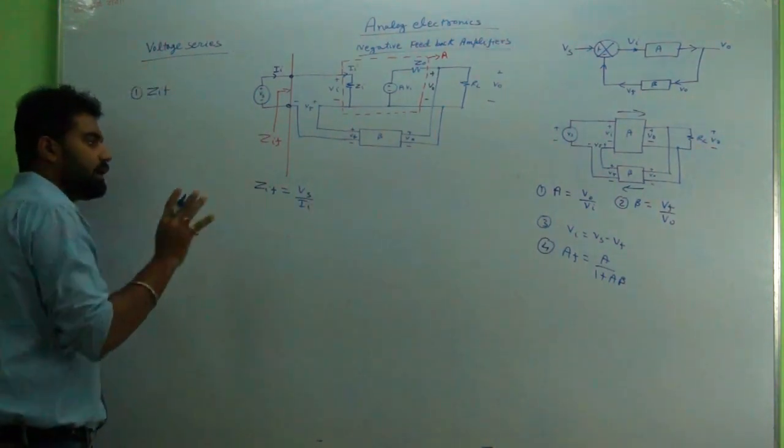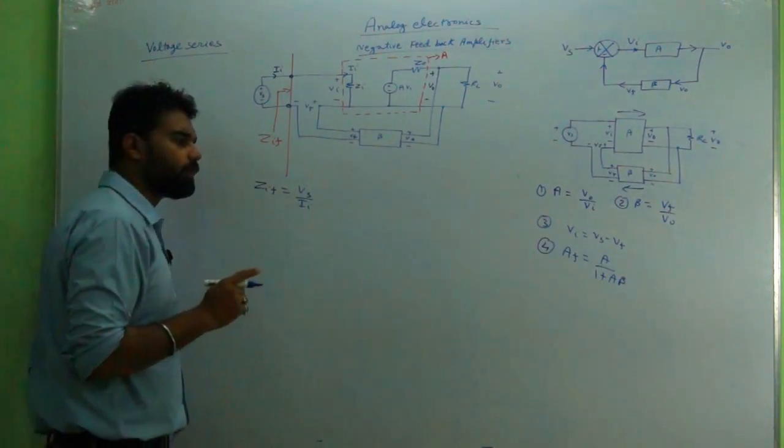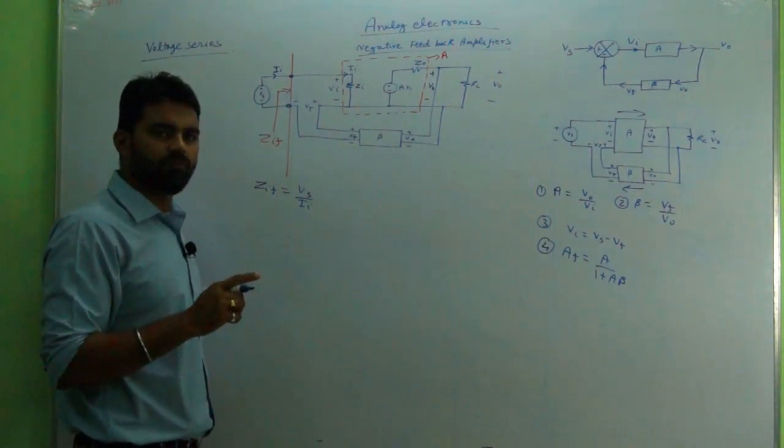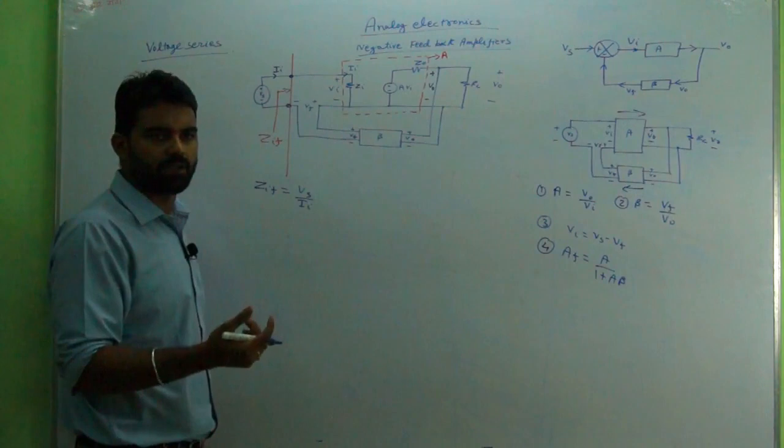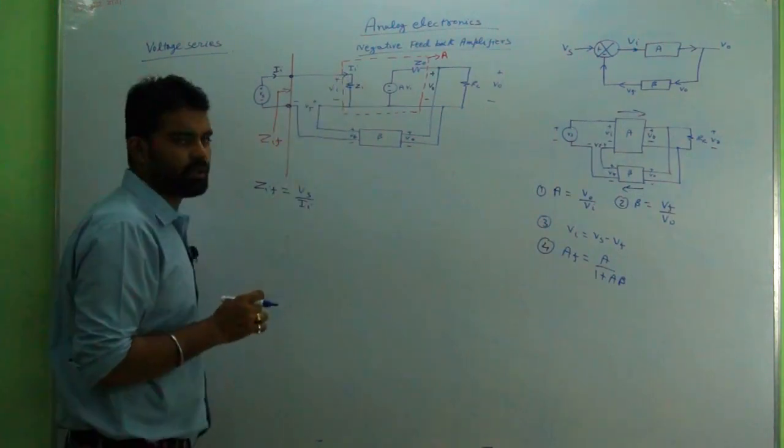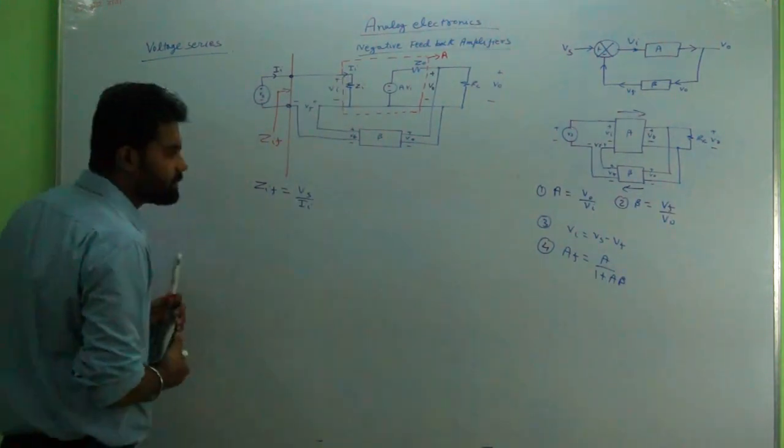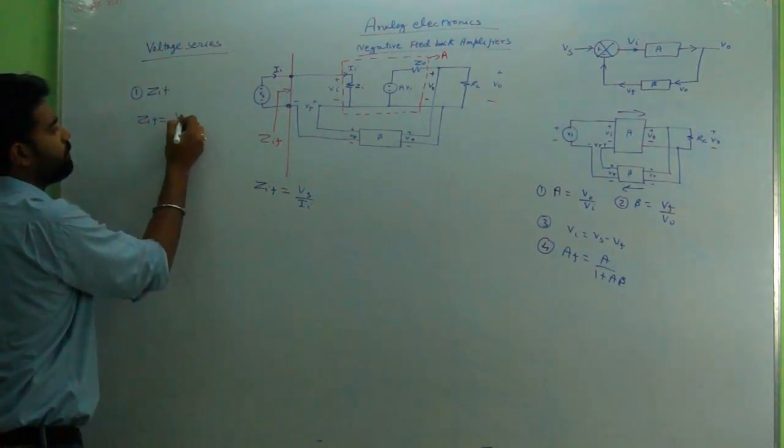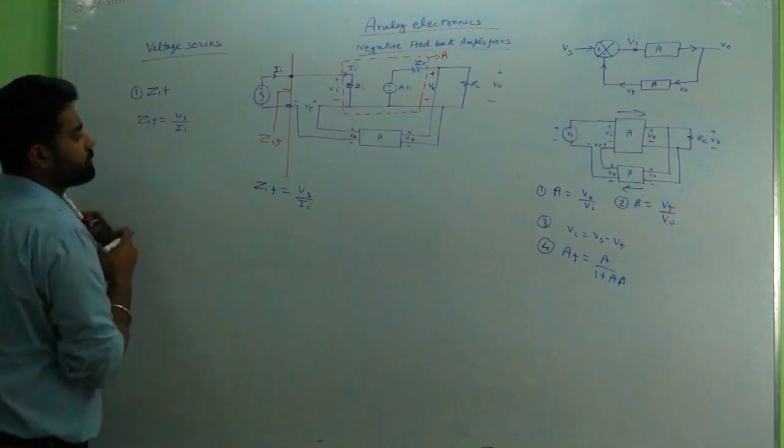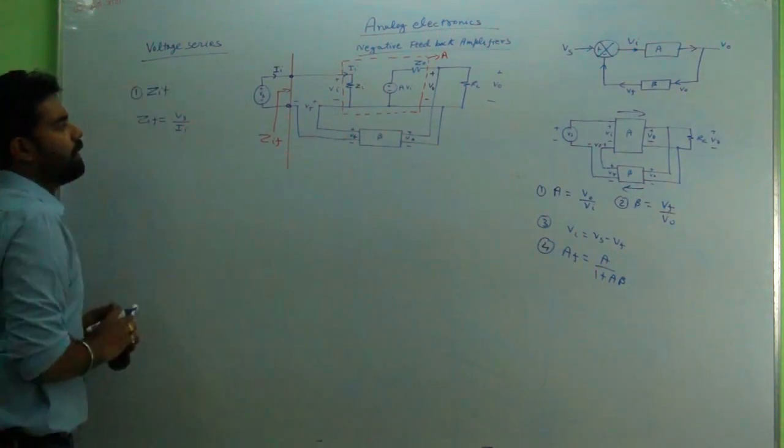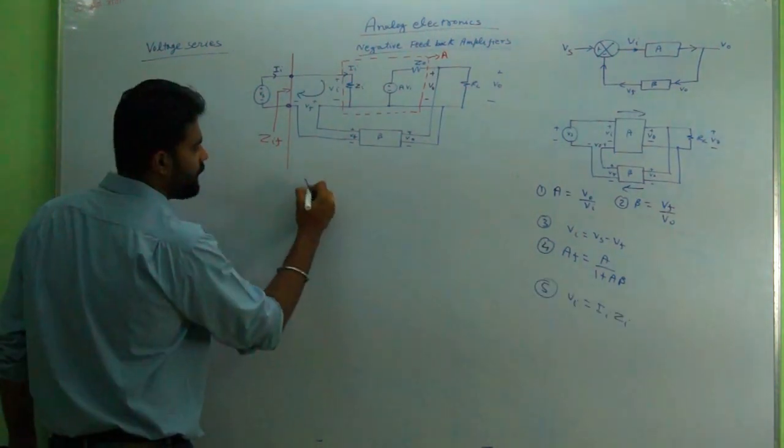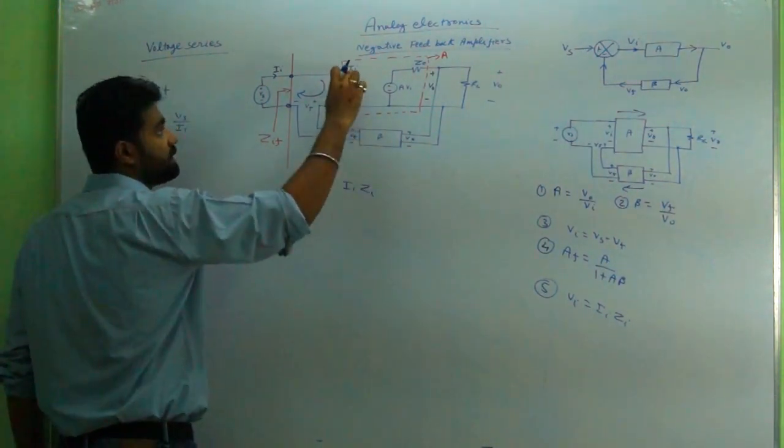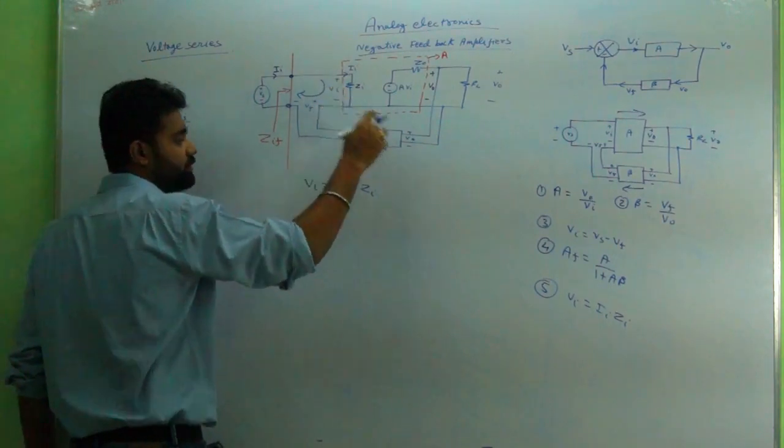Now mathematically we will see that either ZIF will increase or decrease with respect to the available Zi, that is the open loop input impedance. So we will start the derivation with ZIF = Vs/Ii. Now we will start with Vi = Ii × Zi.